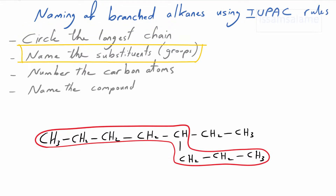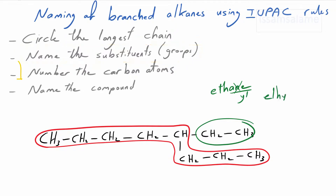After identifying the longest chain, we have to name the groups or substituents coming out from that longest chain. Here we have two carbon atoms coming out from the main chain. We borrow their name from ethane since we have two carbon atoms, and we end it with '-yl', so the name of the group is going to be ethyl.